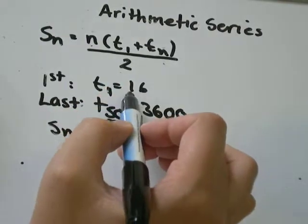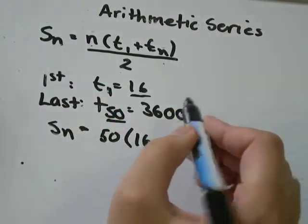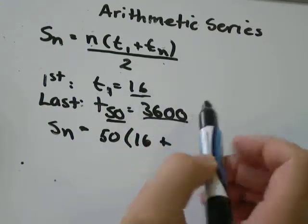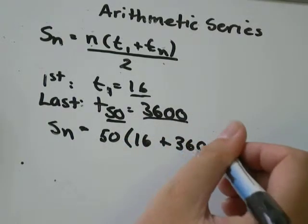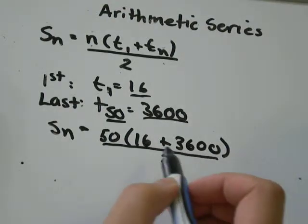The first term is 16, plus the last term is 3600, and all of that divided by 2.